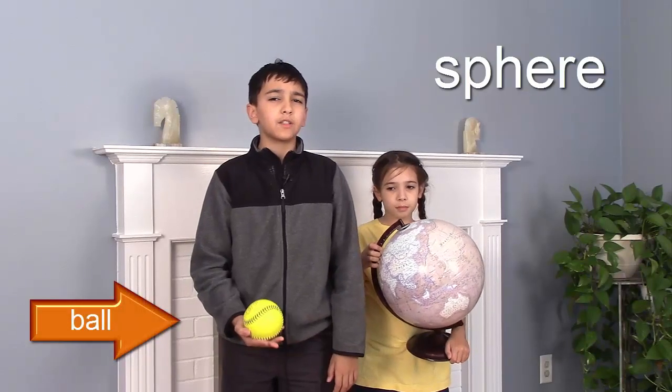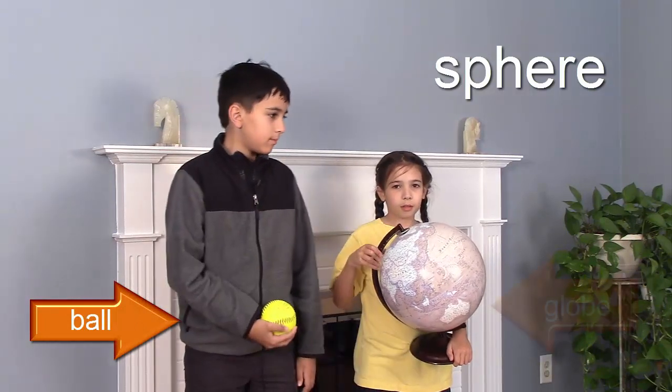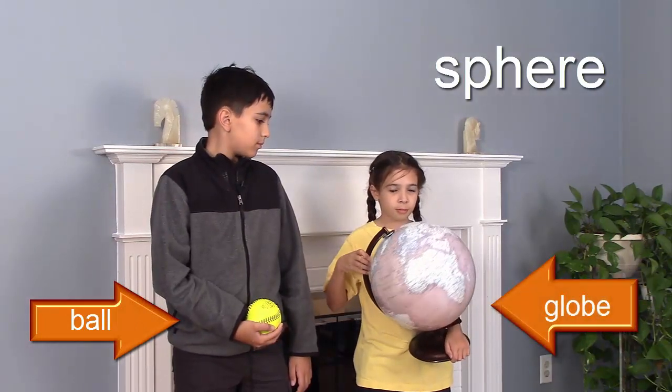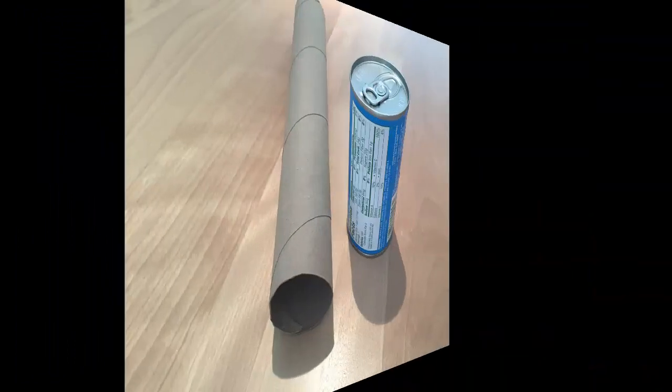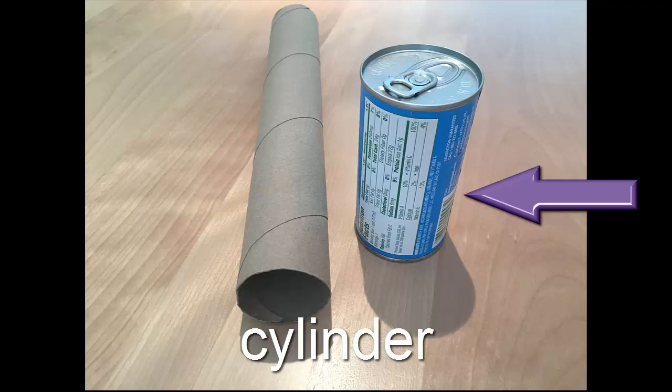A ball is a sphere. A globe is a sphere, too. This is a cylinder. A can is also a cylinder.